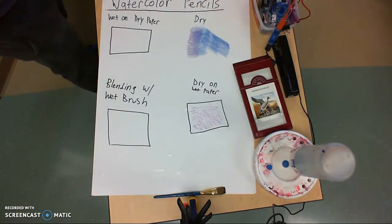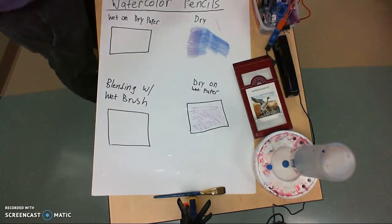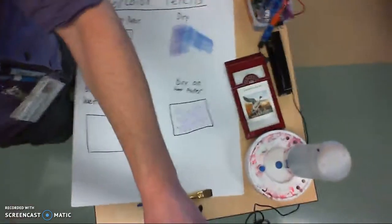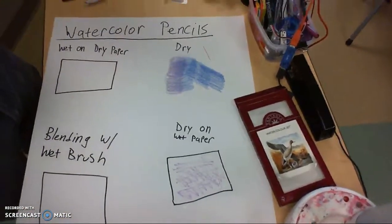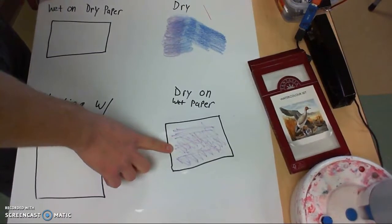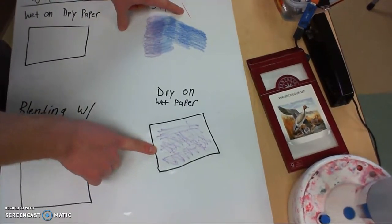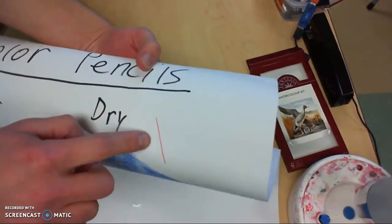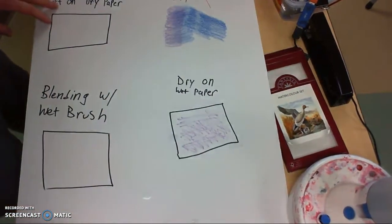For comparison I'll do just a red line here so you can see. If you look here this is where the dry watercolor pencil is on wet paper. Up here this is a streak made with a dry color pencil. So it's a little bit softer line work with the dry color pencil on the wet paper.